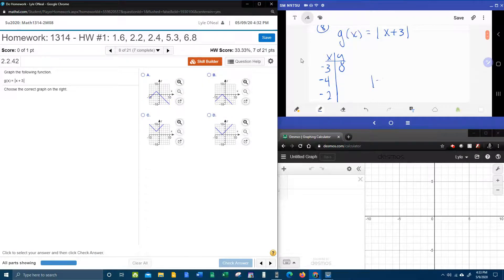For negative four, that's going to be the absolute value of negative four plus three. Doing the order of operations, we need to do what's inside first. Negative four plus three is negative one, and the absolute value of negative one is one. And so that gets our Y value.